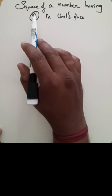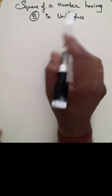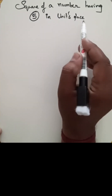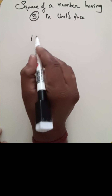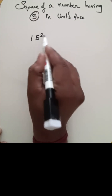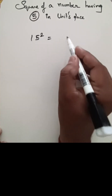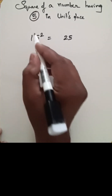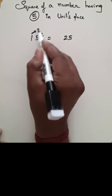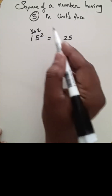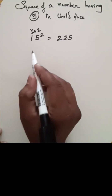Hi friends, in this video let us see finding the square of a number having 5 in the units place. It's quite simple. So if you take 15 square — 5 square is nothing but 25, and then 1, after we have 2, so 1 into 2 is nothing but 2. So 15 square is 225.